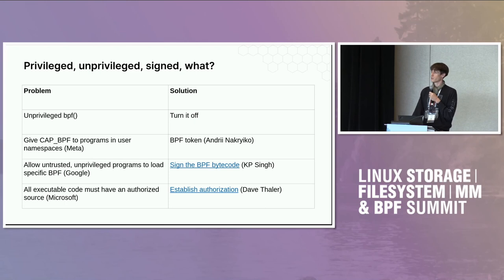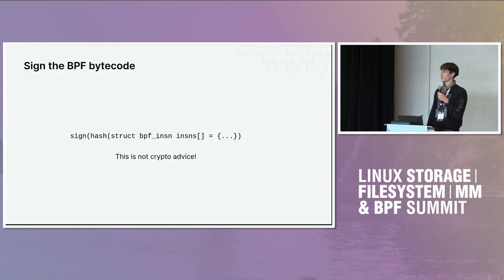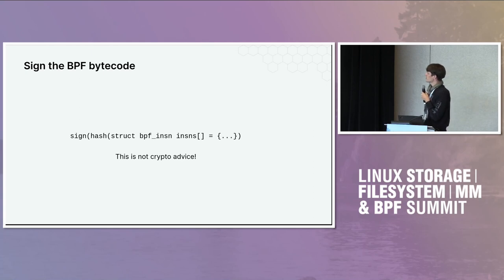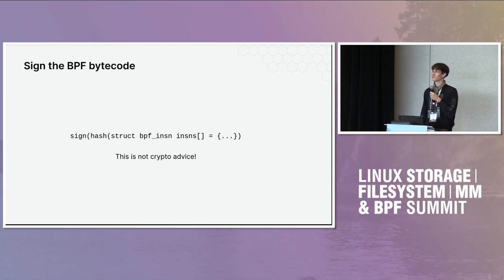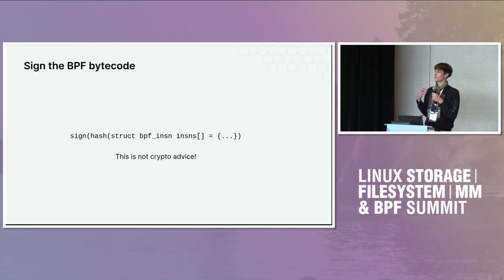Going even further, some companies have requirements that anything executing on a system should have some source of authorization. Microsoft is further along the curve on this than most companies, but security-conscious companies are coming to that conclusion as well. Because this talk is about signing: what is the idea behind signing the bytecode? Very crudely, take the instructions that make up your program, hash it, sign that — done. This is not crypto advice, and there are many details I'm skipping.